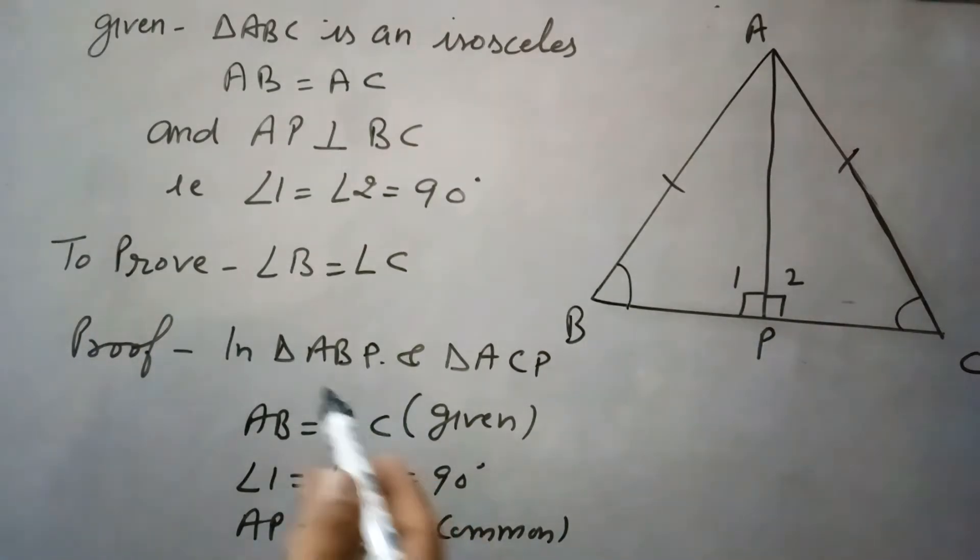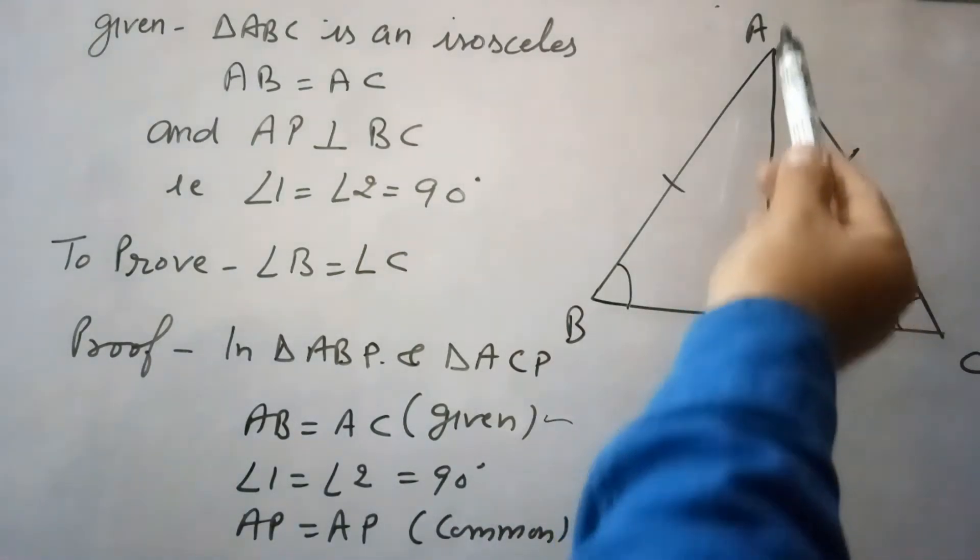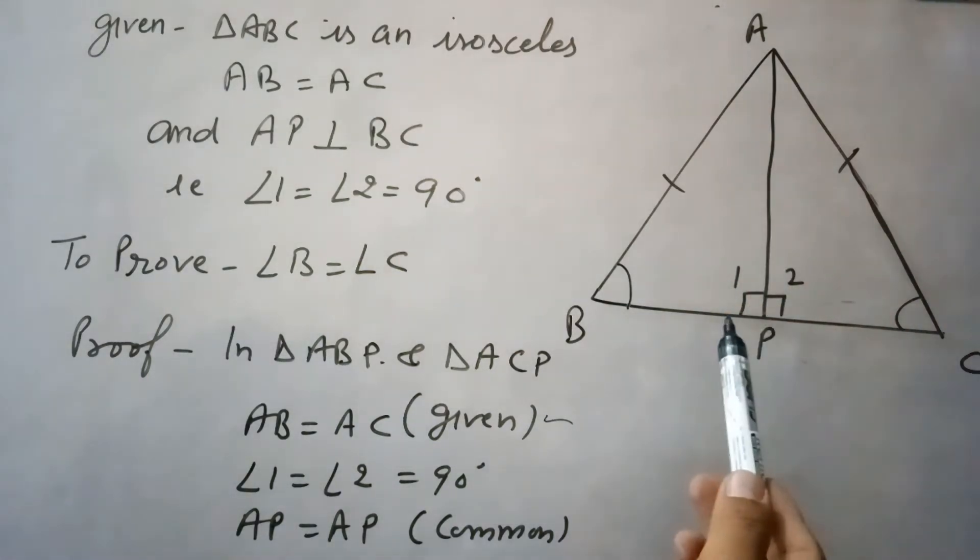So for this, what we will do is take triangles ABP and triangle ACP. Here AB equals AC, this is given. Angle 1 equals angle 2 because both are 90 degrees, and AP is common.